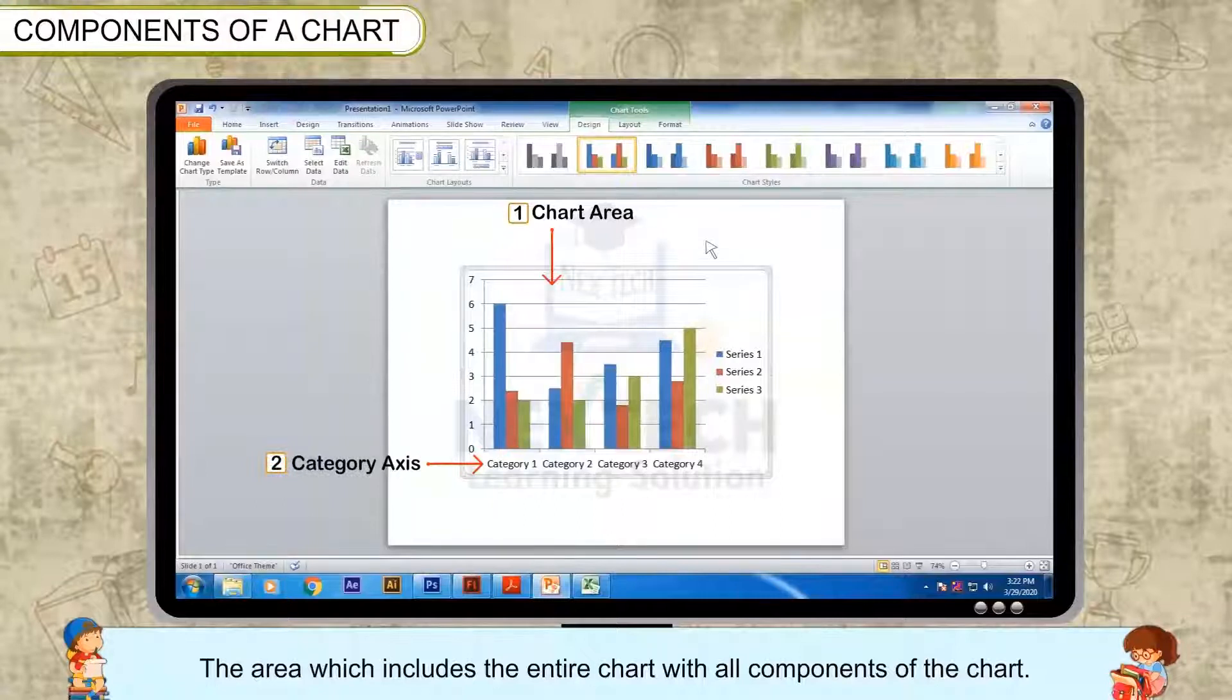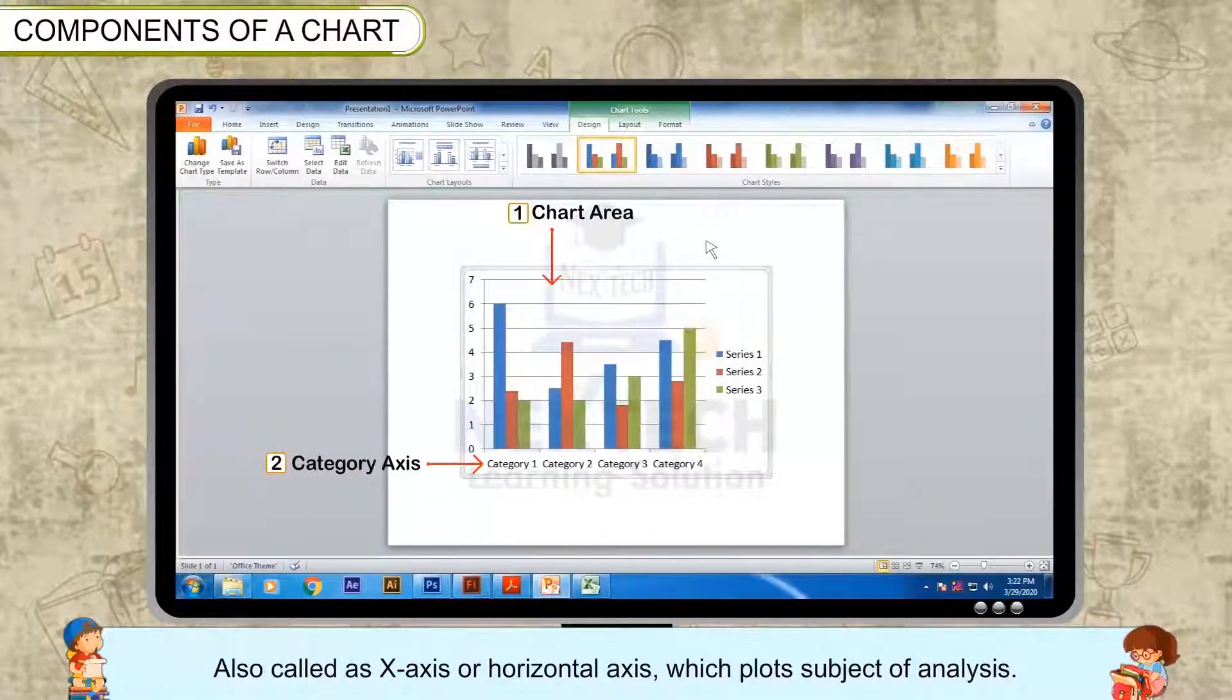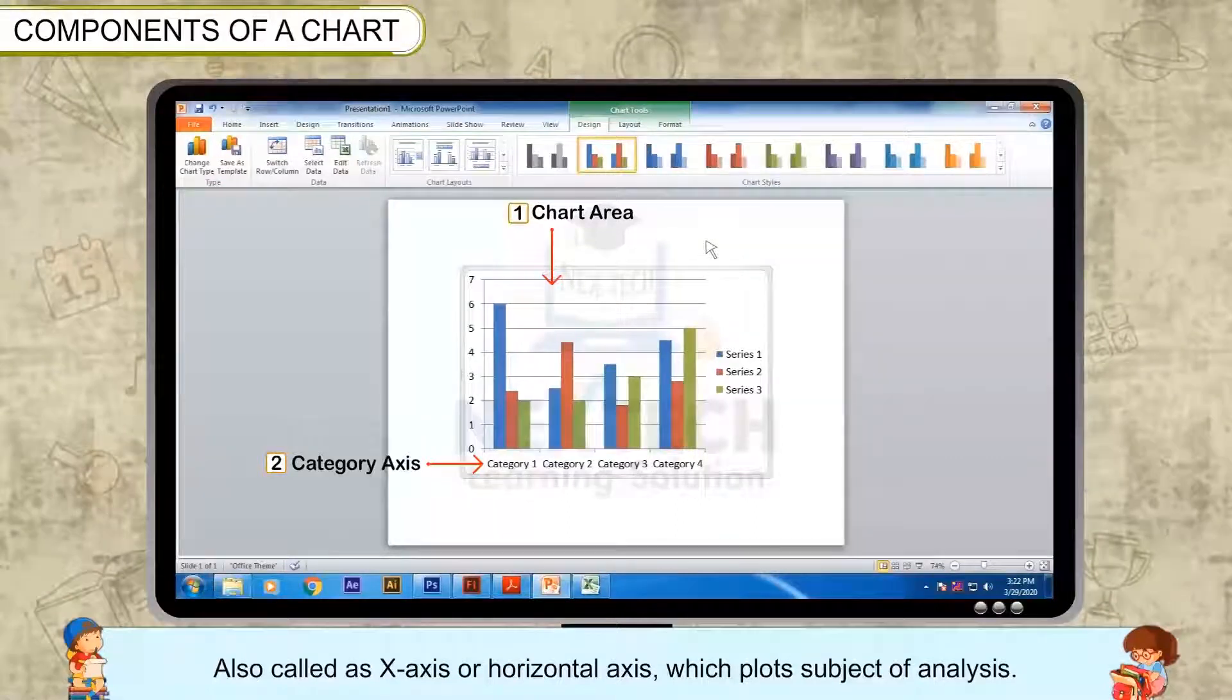Category axis: Also called as x-axis or horizontal axis, which plots subject of analysis.